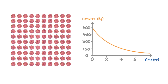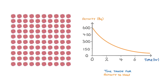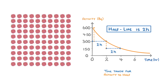To calculate the half-life from a graph like this, we need to find the time it takes for the activity to halve — in this case drop from 600 to 300, which we can see is about 2 hours. To confirm this, we can check another halving by seeing how long it takes to drop to 150. Indeed it does take another 2 hours, so we can be confident that the half-life is 2 hours.